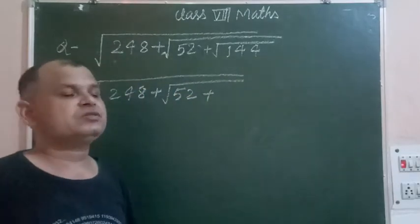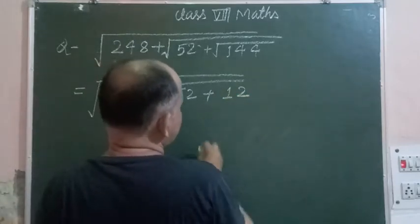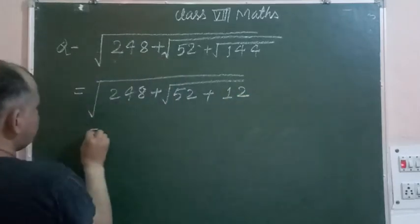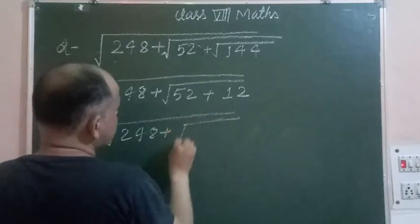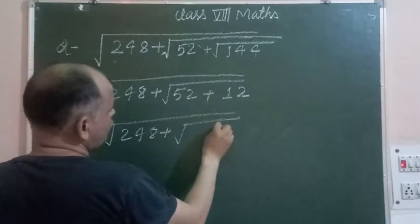144 is the square of 12, so we take it as 12. Now in the next step, we have 248 plus, we added 52, and this is 64.